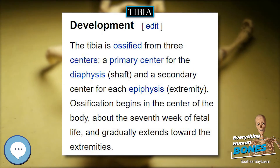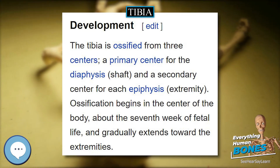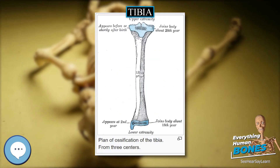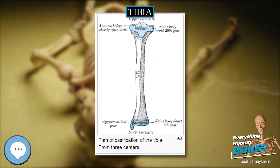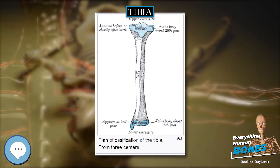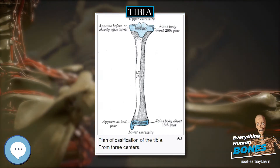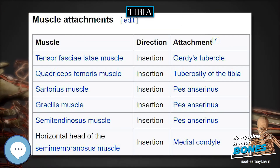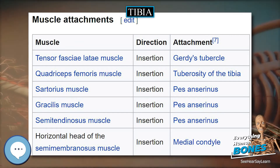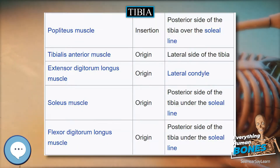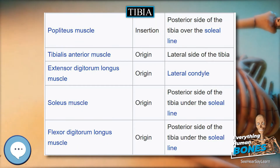The remaining part of the posterior surface is smooth and covered by the tibialis posterior, flexor digitorum longus, and flexor hallucis longus. Immediately below the popliteal line is the nutrient foramen, which is large and directed obliquely downward.